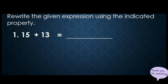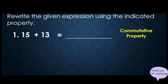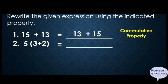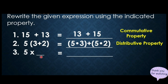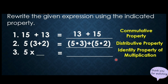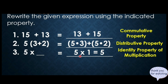Now let's rewrite the given expressions using the indicated property. Number 1: 15 plus 13 — applying commutative property, we change the order, so it becomes 13 plus 15. Number 2: 5 times the quantity (3 plus 2) — applying distributive property, we distribute 5 to 3 and to 2, so it becomes 5 times 3 plus 5 times 2. Number 3: 5 times blank equals 5 — applying identity property of multiplication, we multiply 5 by 1 to remain its identity, so it becomes 5 times 1 equals 5.